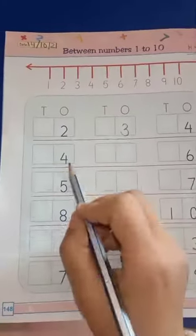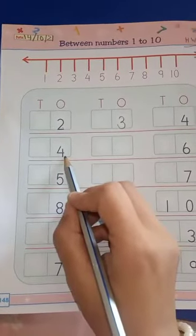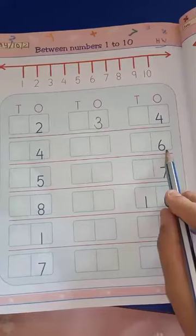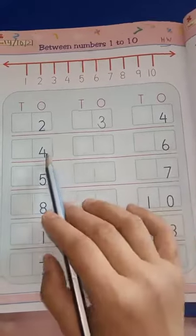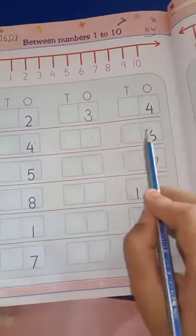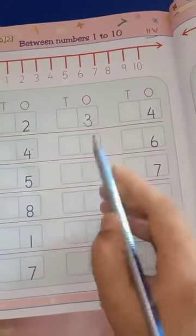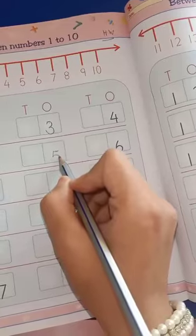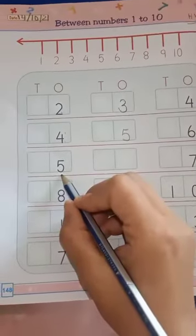Now which number is this? Number 4. And which number is this? Number 6. So what comes between 4 and 6? 4, 5, 6. So write down here 5.